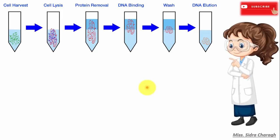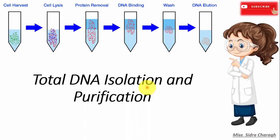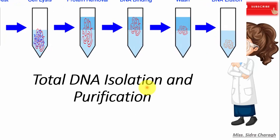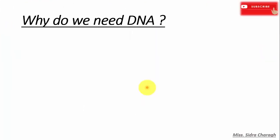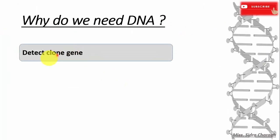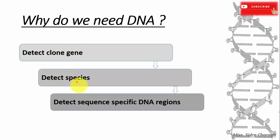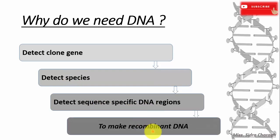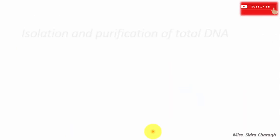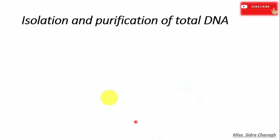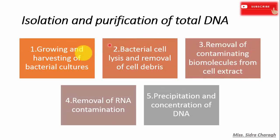We will discuss genomic DNA isolation and purification. First, let's see why we need DNA. We need DNA to detect and clone genes, to detect different species, to detect sequence-specific DNA regions, and to make recombinant DNA. First, we will see what steps are involved in the isolation and purification of genomic DNA.